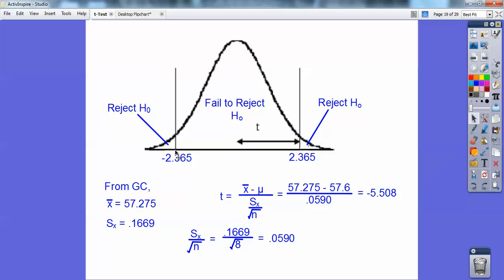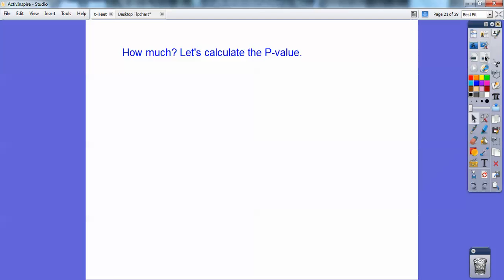The cutoff to not reject it would be negative 2.36. Negative 5.508 is somewhere way over here. It's so far over that it's very strong evidence to go ahead and reject H0. And how strong? Let's calculate a p-value.